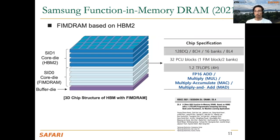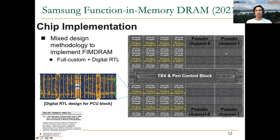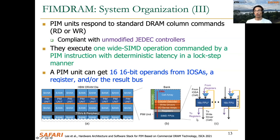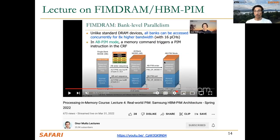We also talked about a couple of proposals from Samsung. The first was the Function-in-Memory DRAM, also called HBM PIM, based on HBM2 memory technology, which customizes some memory layers to integrate processing elements called PCU blocks. Each PCU block is connected to two memory banks. These PCUs operate on 16 16-bit operands at the same time because they are SIMD units, with SIMD FPUs placed near the input/output sense amplifiers of each memory bank. We covered HBM PIM in lecture four of this spring 2022 semester.